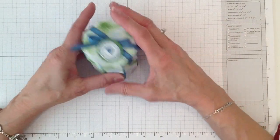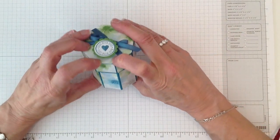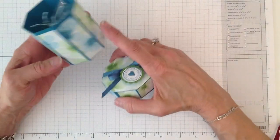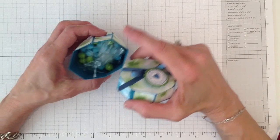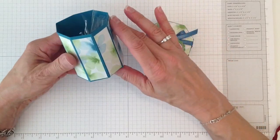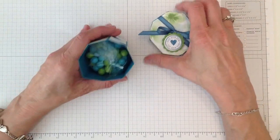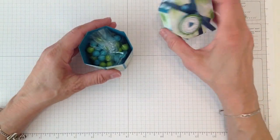It was inspired by a fellow Stampin' Up demonstrator. Her name's Tracy, and she used this bottom part, but she made like a little cup out of it, and I love the shape of this box. So I thought I have to make a lid for that.